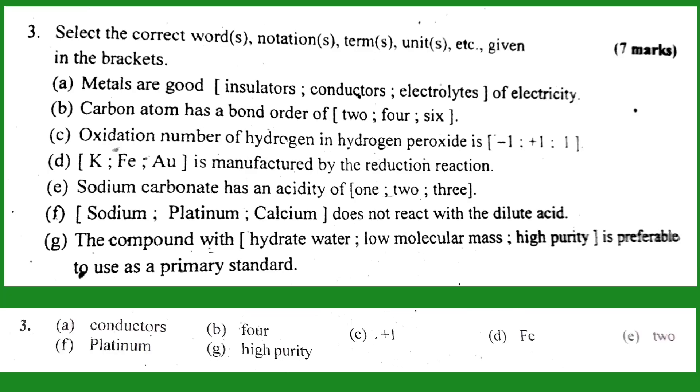Number three: select the correct words, notations, terms, units, etc. given in the brackets. Number A: metals are good conductors of electricity. The correct answer is conductors. Metals are good conductors of electricity.